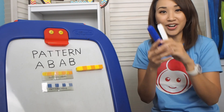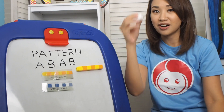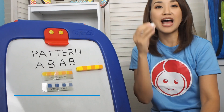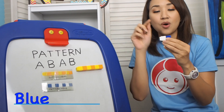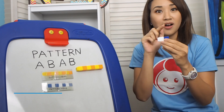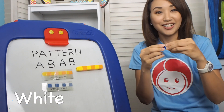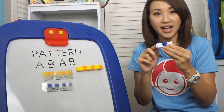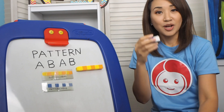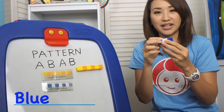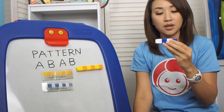Let's try it with our unifix cubes again. So, what is the first color? White. What is after white? Blue. Let's check. White, blue. What's after blue? White. Very good. Let's check again. White, blue. White, blue. Let's check. White, blue. White, blue.